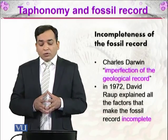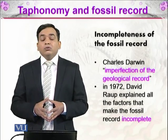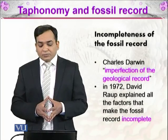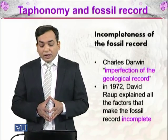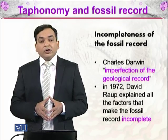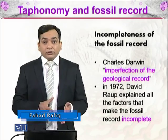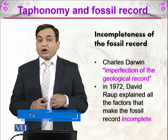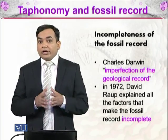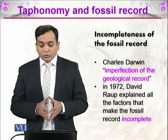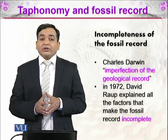The incompleteness of the fossil record is obvious, and we know that it is an inadequate window of information that we can get for earlier times. Charles Darwin was the first person to acknowledge this. He used the term 'imperfection of the geological record' in his book in 1859. He used fossils for his theory of natural selection and evolution, but he knew that these fossil records are inadequate. In 1972, David Rowe explained all the factors that make the fossil record incomplete and termed those factors as filters.